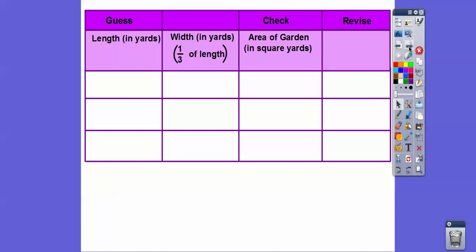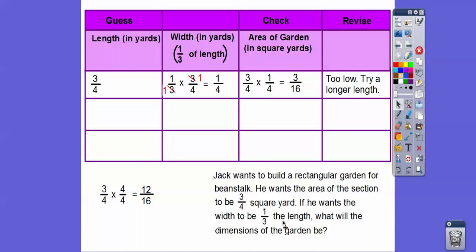We want to get an area of three-fourths, so let's guess three-fourths for the length. The width is one-third of that, so one-third of three-fourths: the threes cancel, leaving one-fourth. Area is length times width: three-fourths times one-fourth equals three-sixteenths. Three-fourths in sixteenths is twelve-sixteenths. Three-sixteenths is too small — we need twelve-sixteenths — so let's try a longer length.